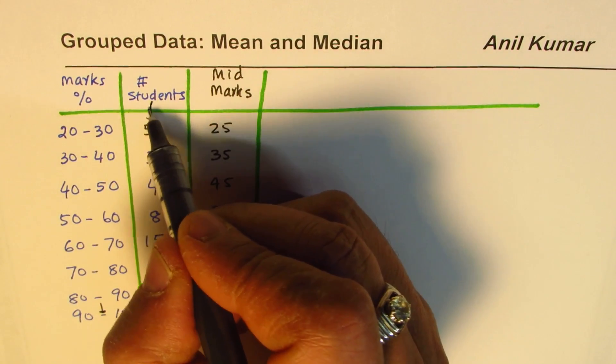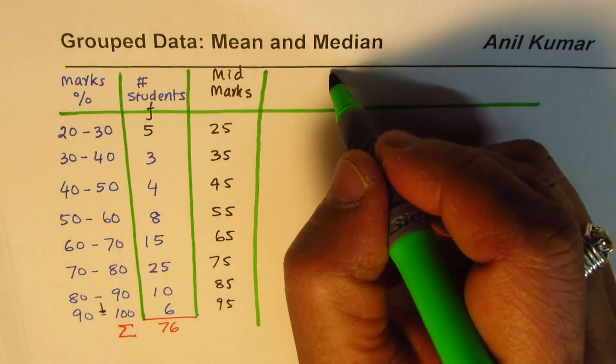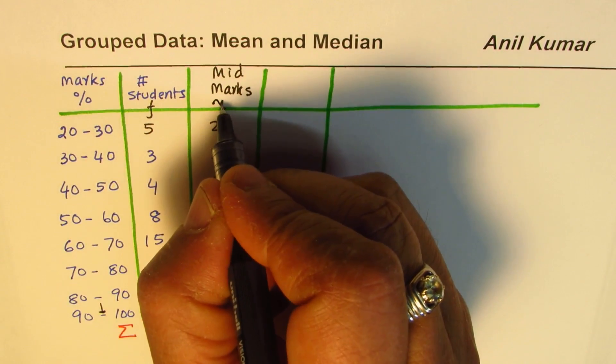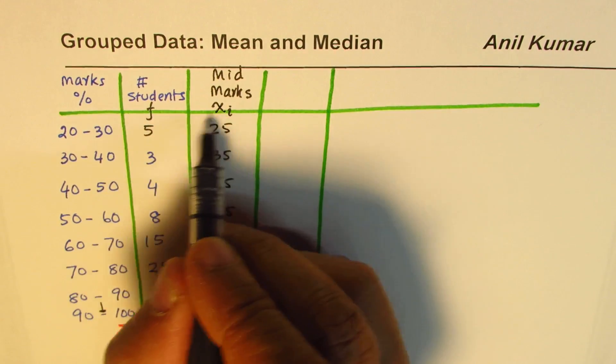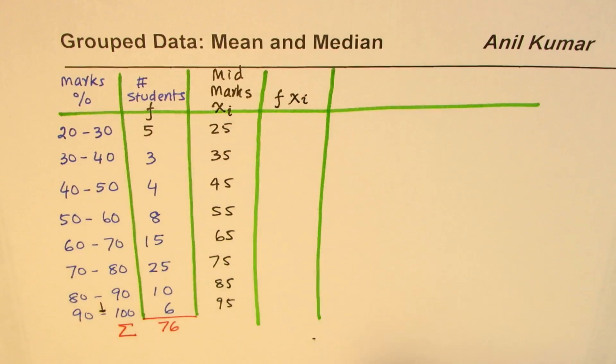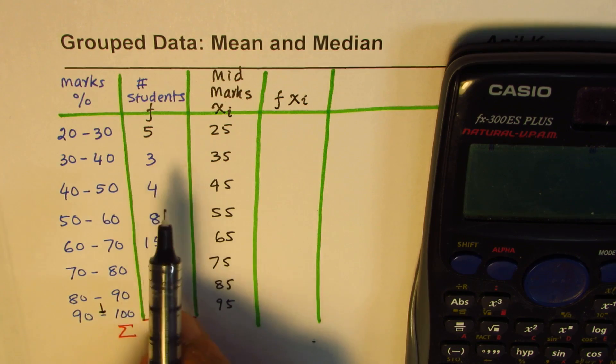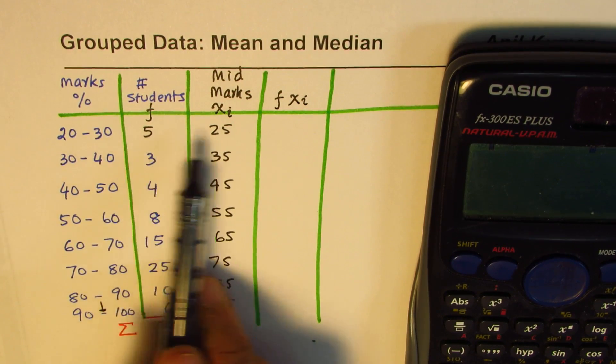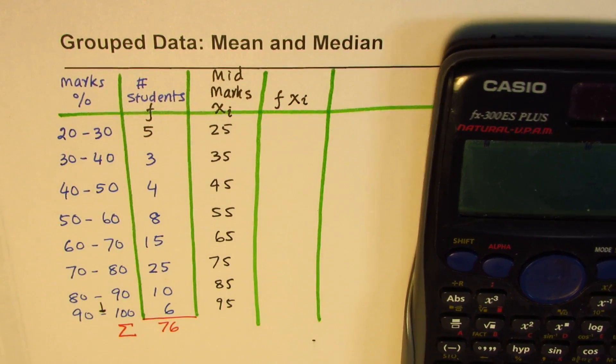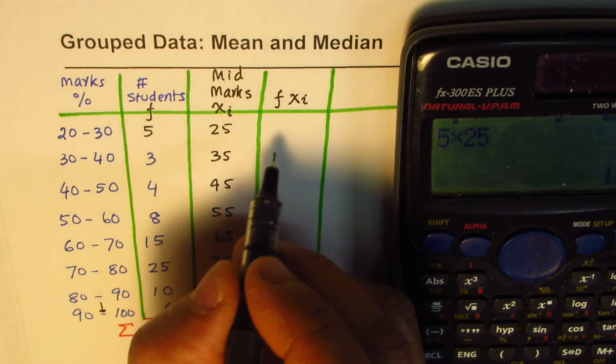Once you have the mid value, and this number represents frequency, you make another column which is product of mid value - let's call this xi - product of these two which is f times xi. On average the marks obtained by the number of students in that group will be the product of these two.